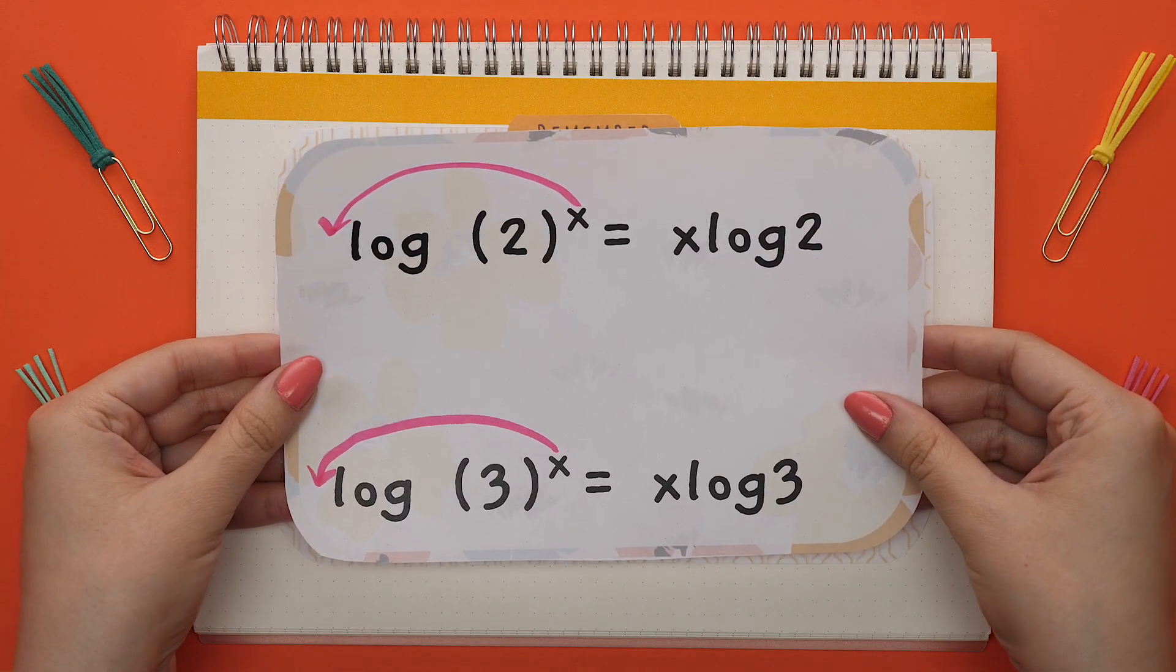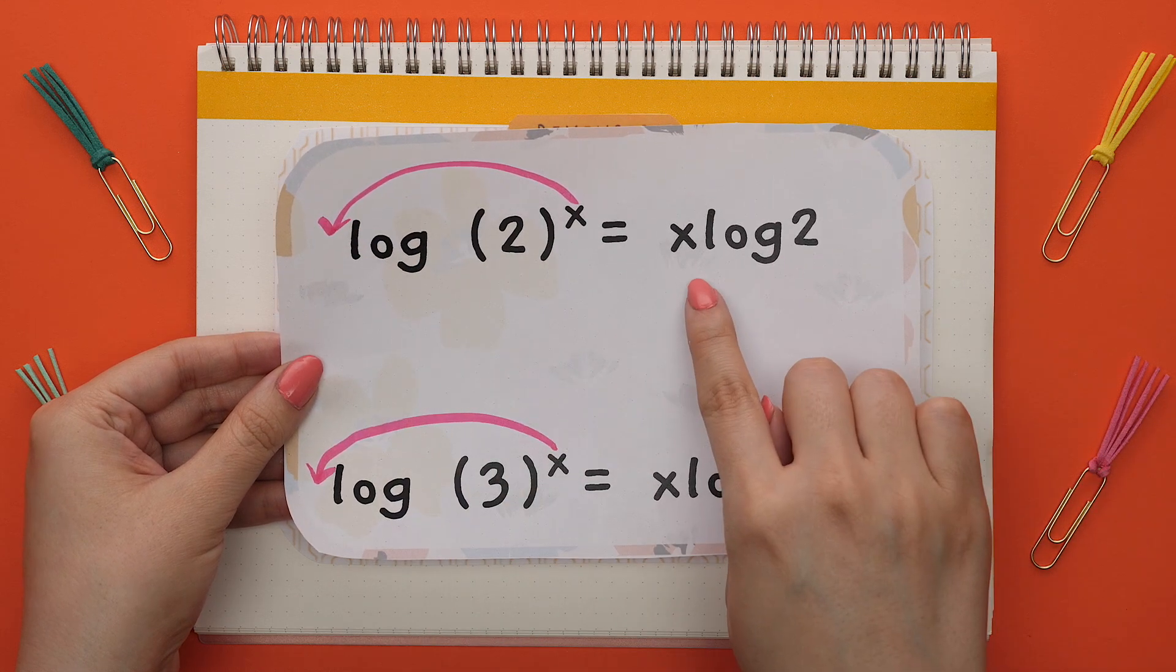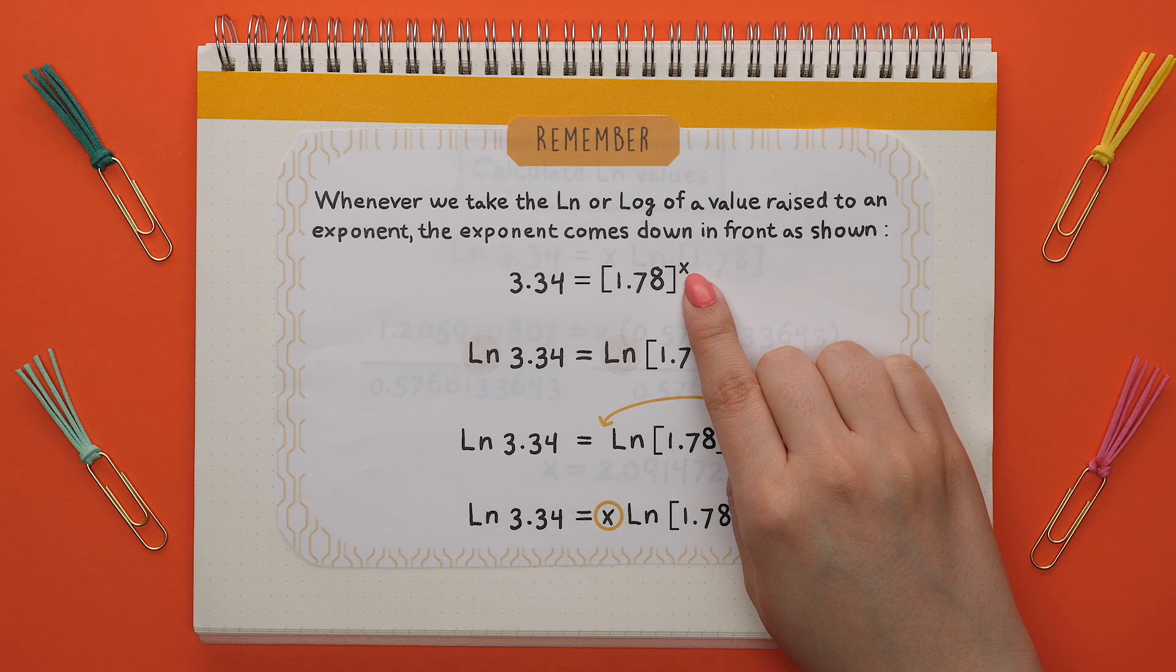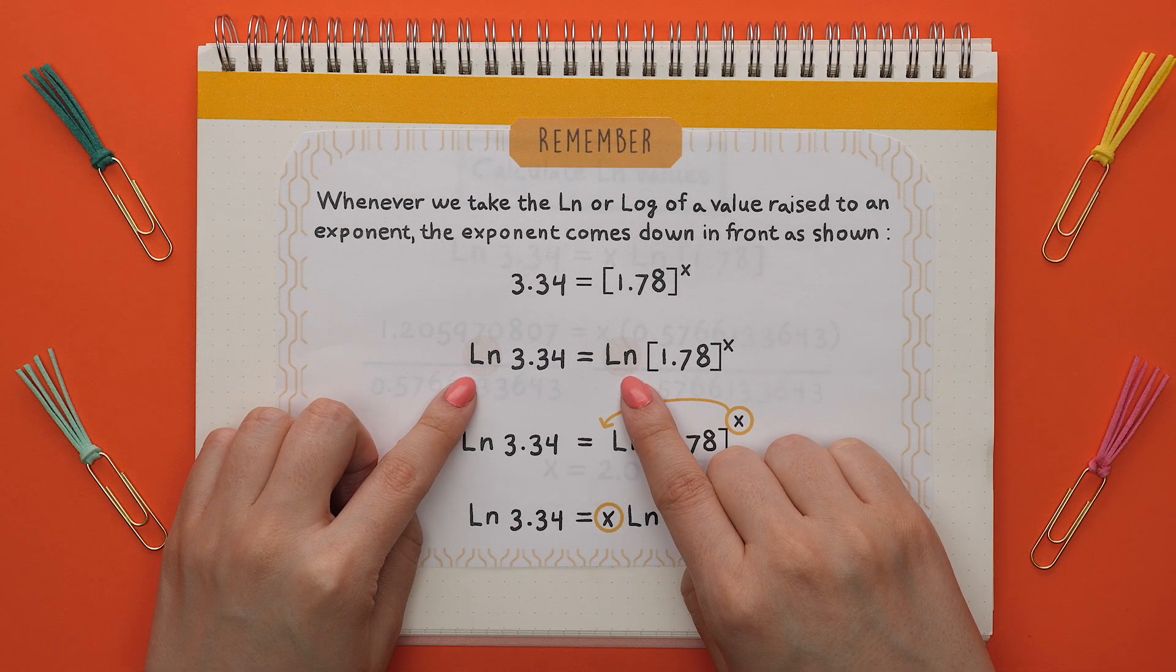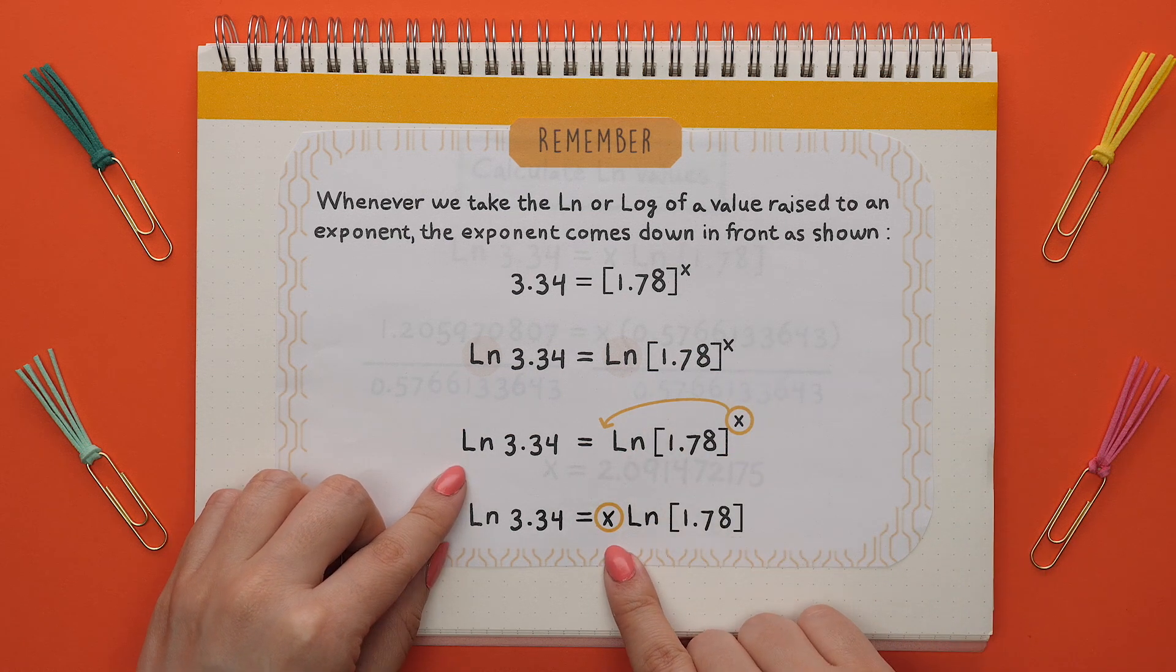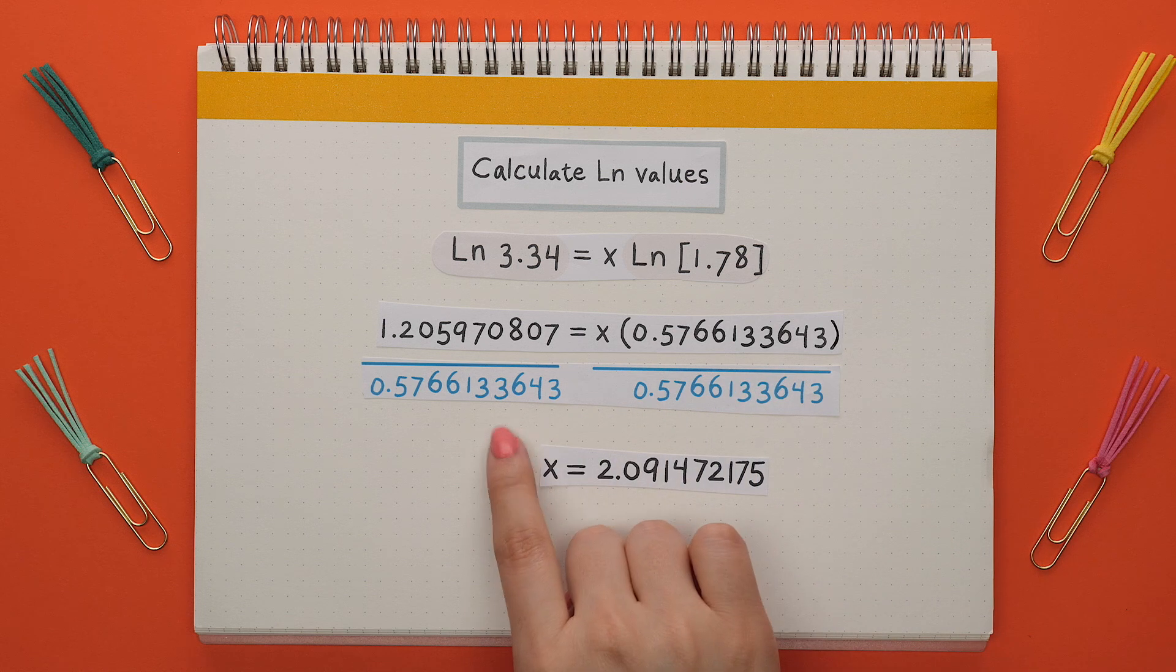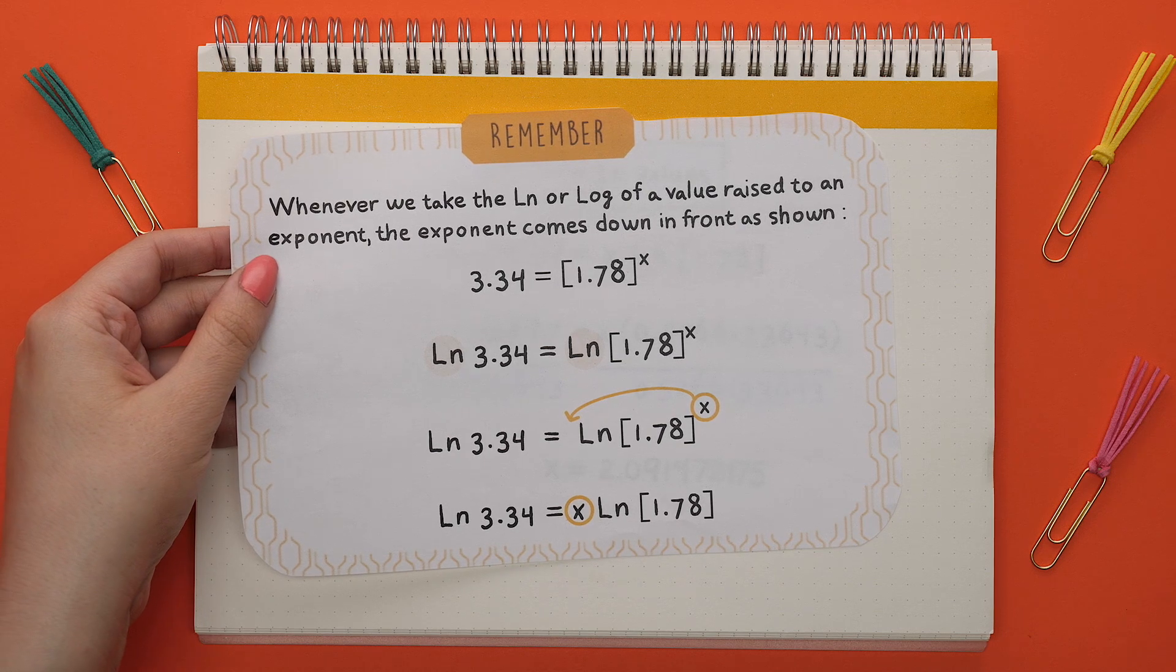This next property is whenever you take the log or ln of a number with an exponent. The exponent comes down in front of the log or ln. For example, if you were trying to solve for x here, the only way to do this is by taking the ln of both sides since this is an exponential form. By taking the ln of this number with an exponent, the exponent will come down in front of the ln and you would continue to solve this question by isolating x. You can take the ln of each value separately, then divide by the new value to get x. You will see examples like this in chemistry too, specifically when you are finding the rate law.